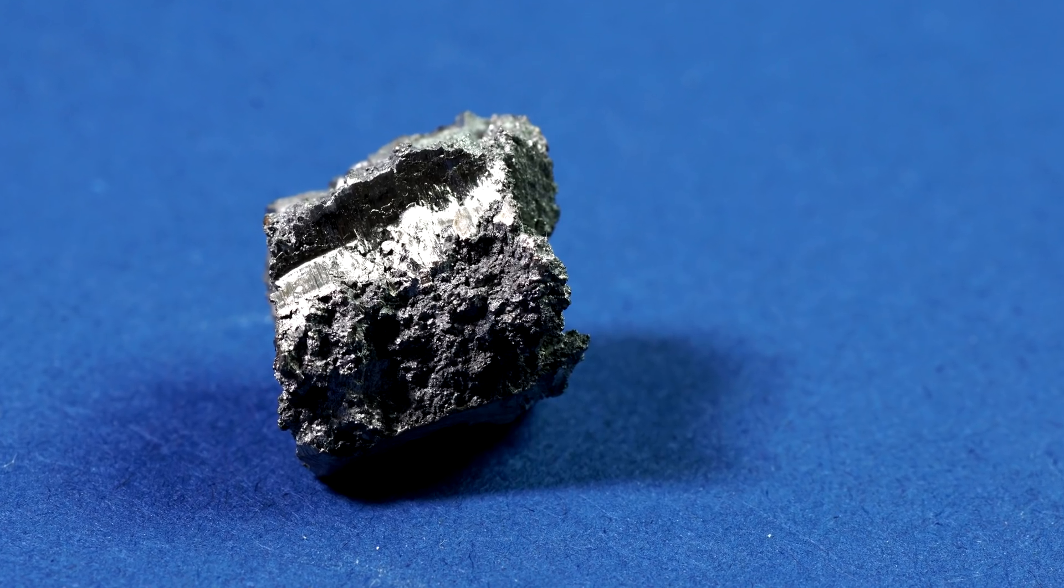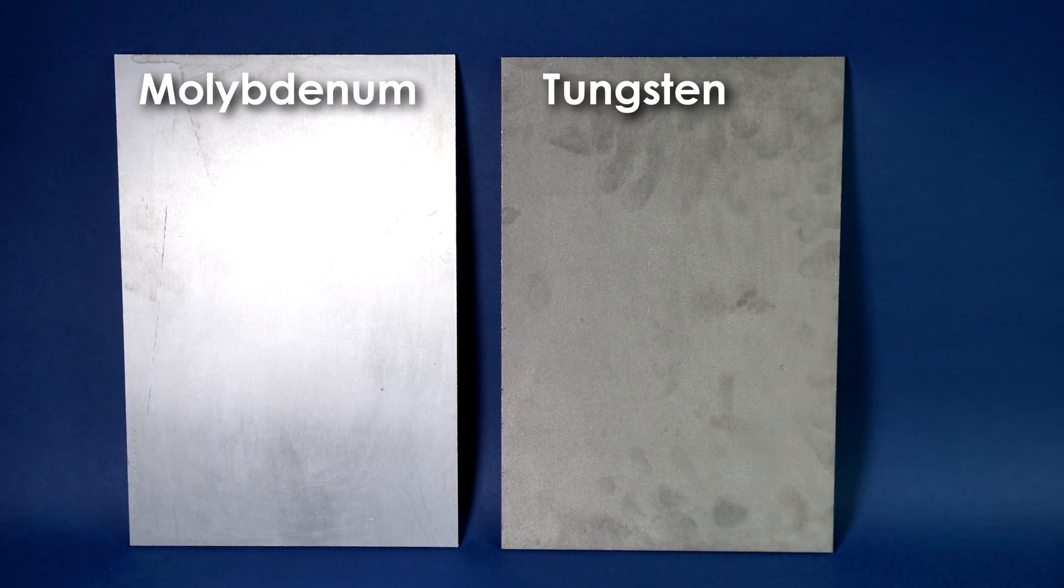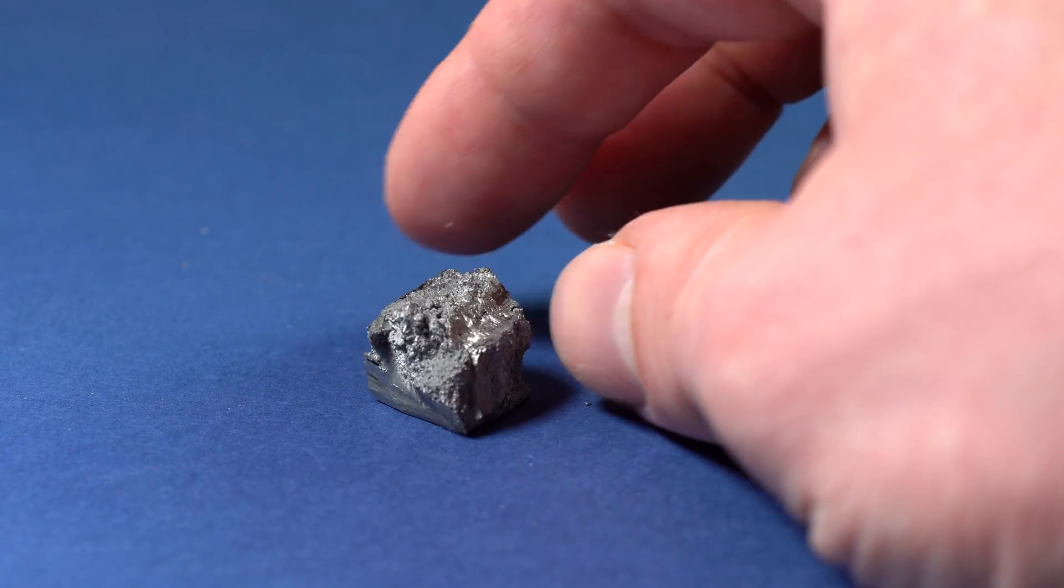Nowadays, metallic yttrium is used as addition to zirconium, molybdenum and chromium alloys to reduce the size of the metal's crystals. It's also used in aluminum alloys.